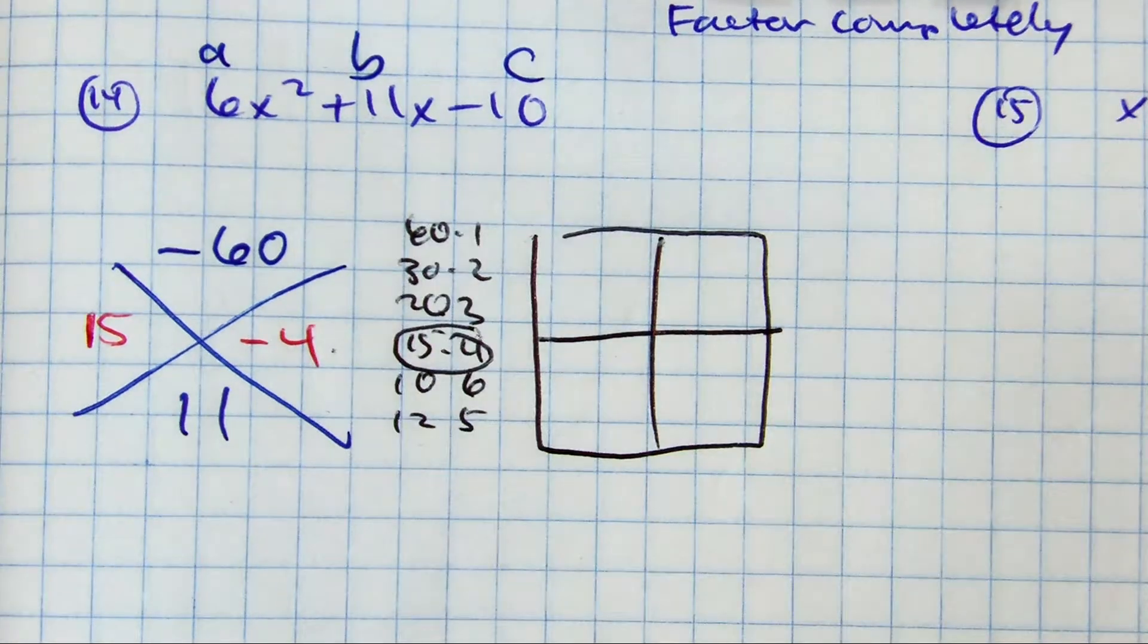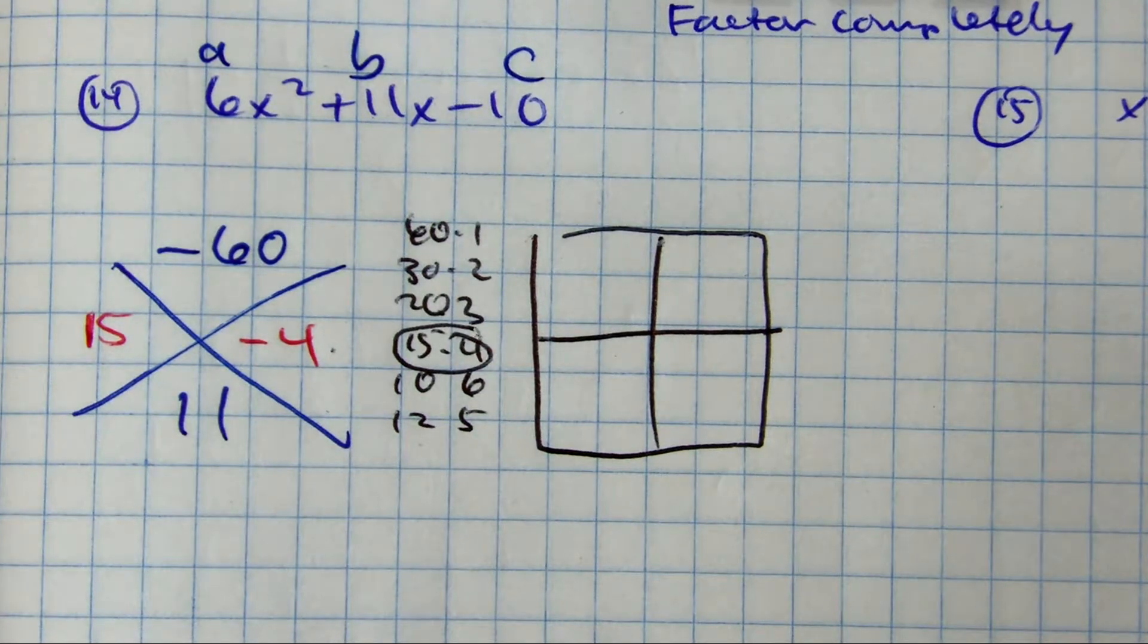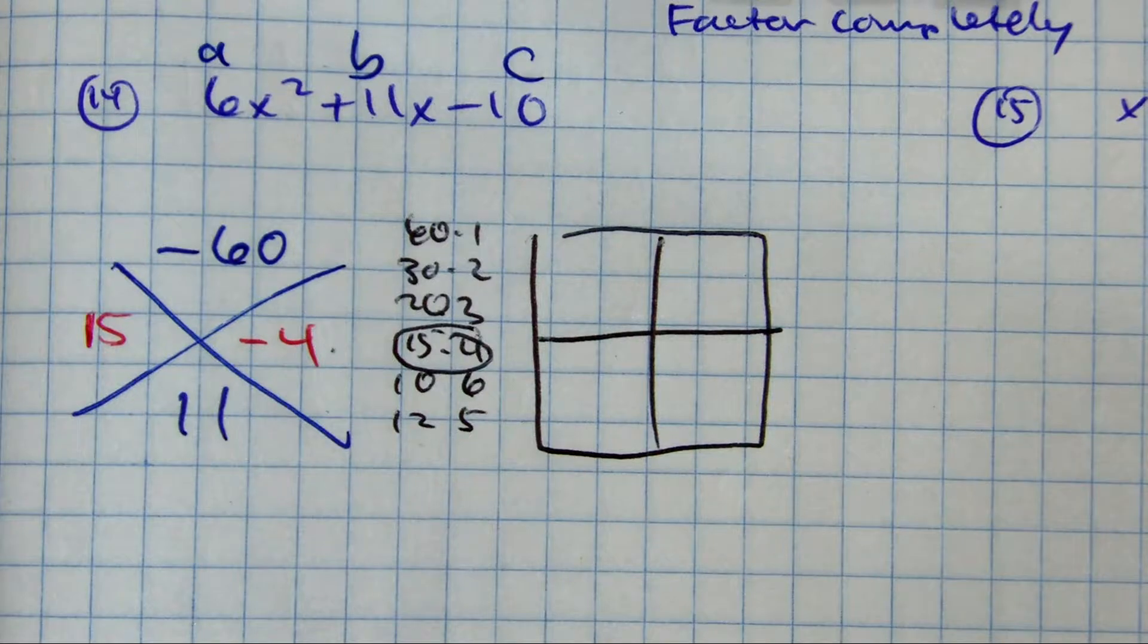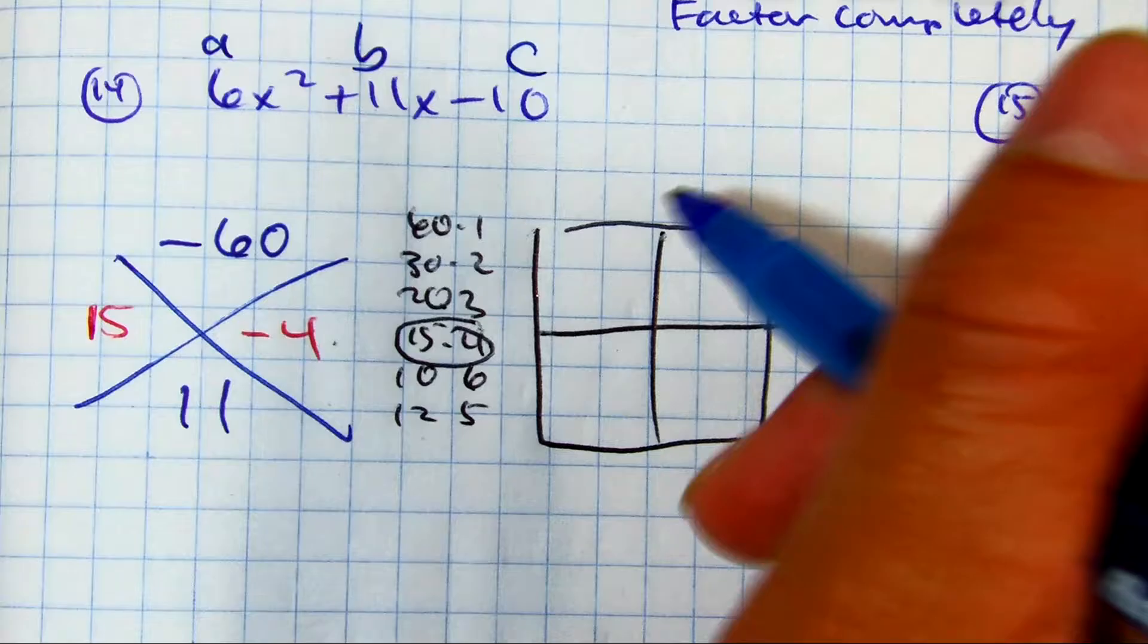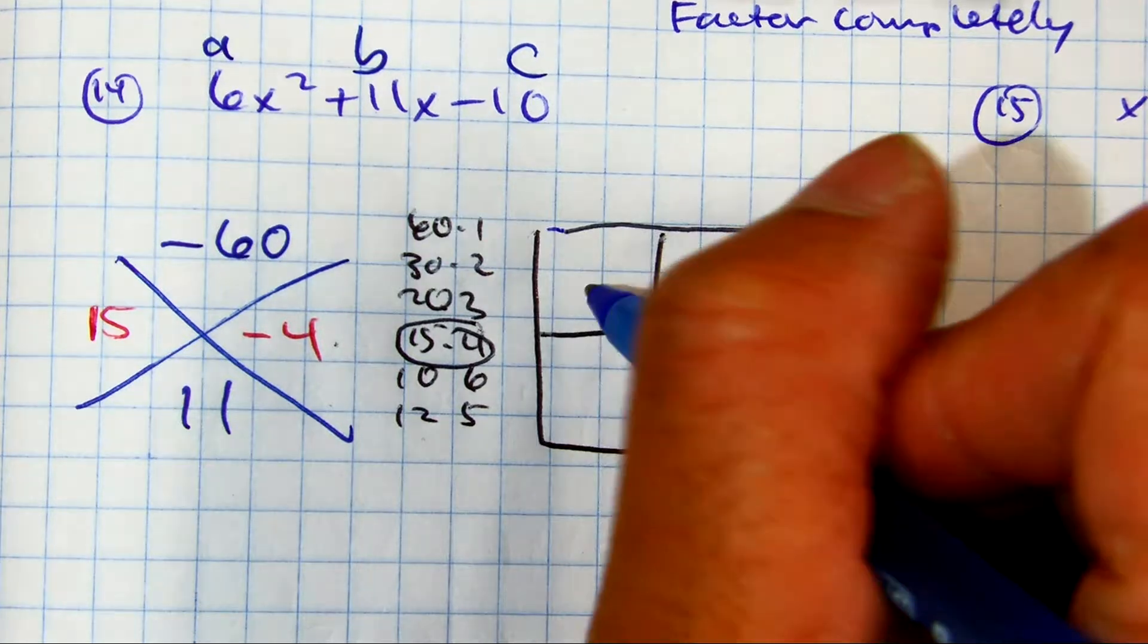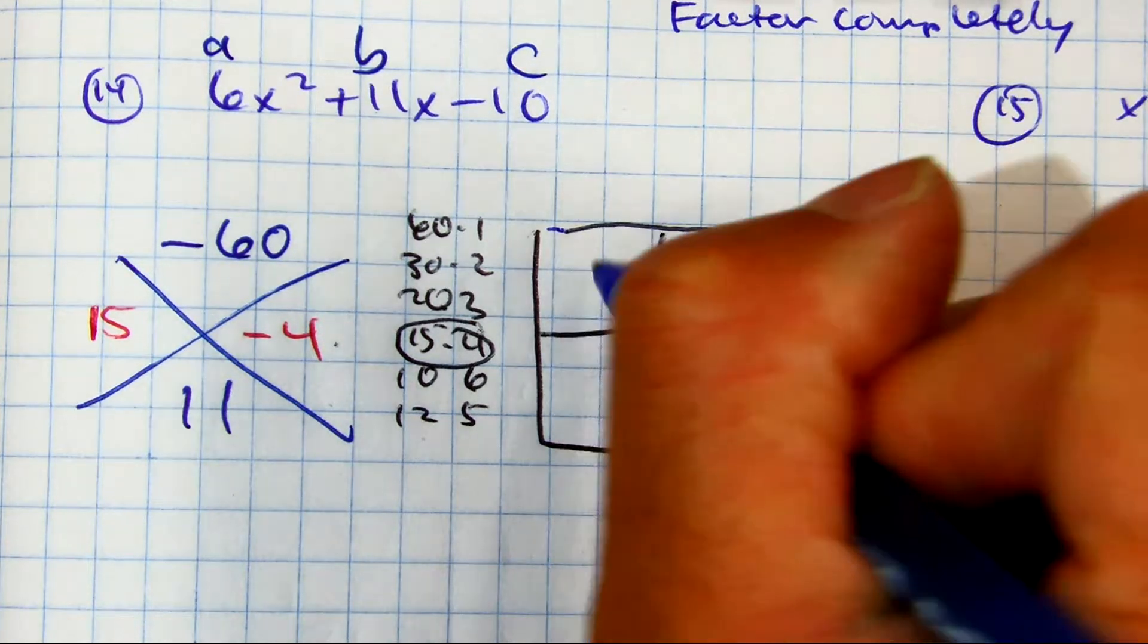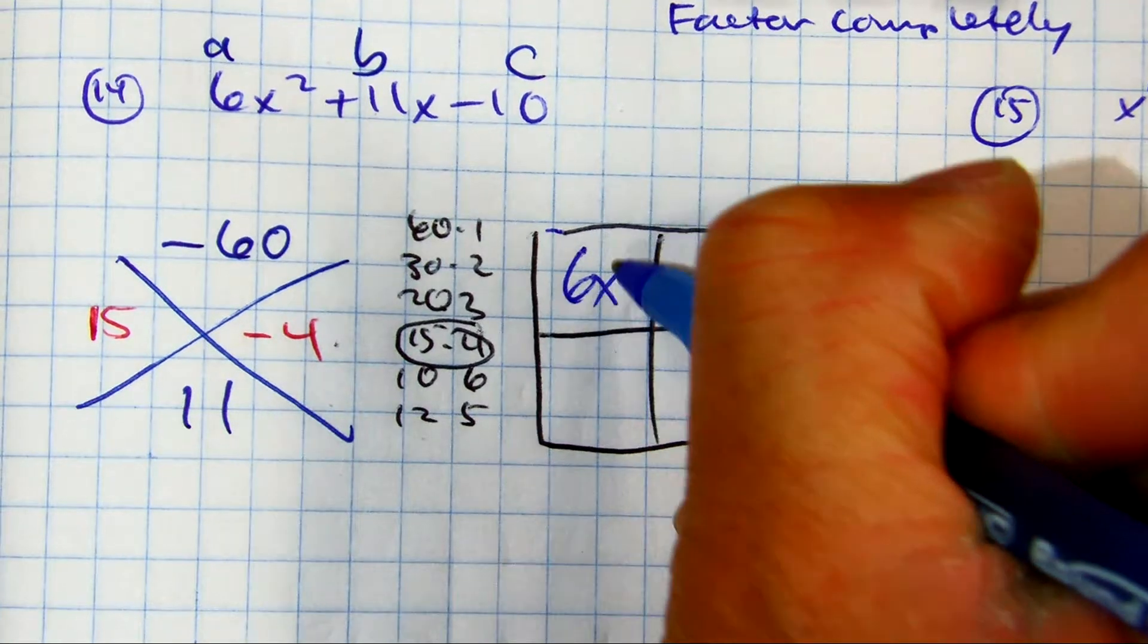All right, fill out this box for us, Sophie. What goes here? What goes in these two boxes?